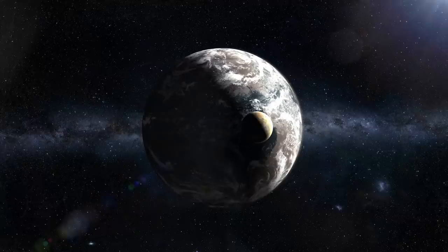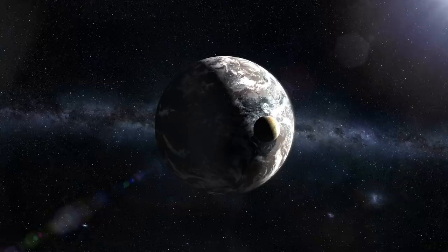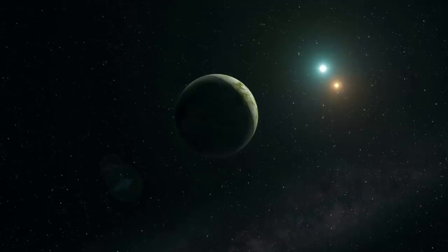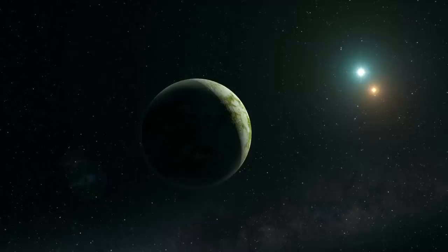Teegarden b orbits within the habitable zone of its host star. This means that its atmospheric composition could allow for stable liquid water on its surface, and it's thought to have surface temperatures around minus 27 degrees Celsius. The planet's minimum mass and diameter are identical to those of Earth. Because of this, Teegarden b is likely to be rocky with an ocean of water on its surface.